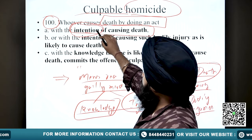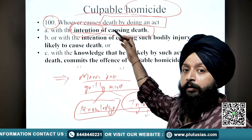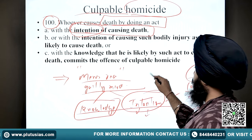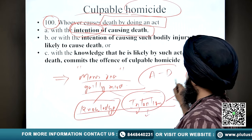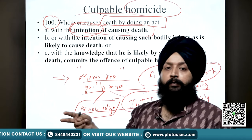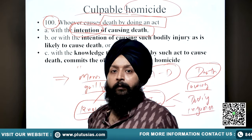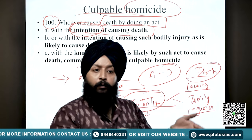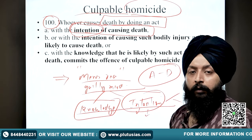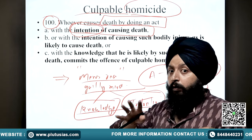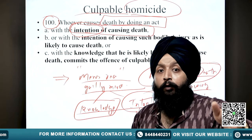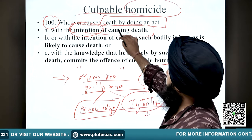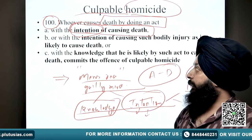If a person is causing an act by which death is caused, and the person has intention of causing death, that means the person has created culpable homicide. Suppose A shoots B in the head - obviously, shooting somebody in the head means you wanted that the person should die. Everybody knows the consequences of shooting a person in the head. After knowing the consequences, you are shooting the person in the head, which means you are intending that the person should die. So if a person causes death by doing an act intentionally, that is culpable homicide.